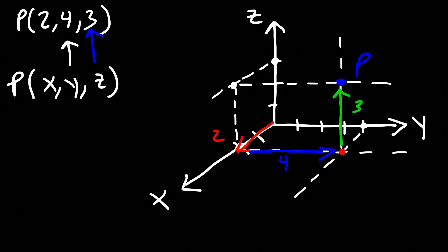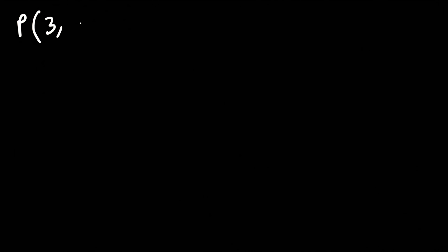And that will take us to the point 2, 4, 3. That's how you graph a point in a three-dimensional coordinate system. For practice, let's try another example — go ahead and graph the point 3, negative 4, 5.